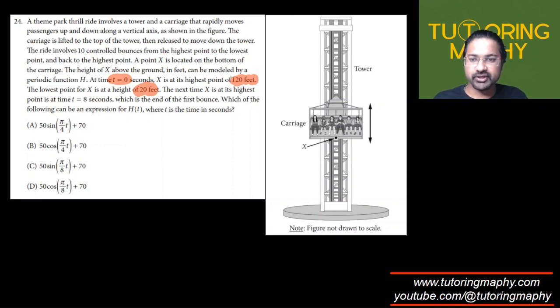At t equals 0, we can find which option gives 120. If you put t as 0 in the sine function, it will just become 0 and the height will come as 70, which is not correct because it should be 120. So A and C are rejected by this logic.